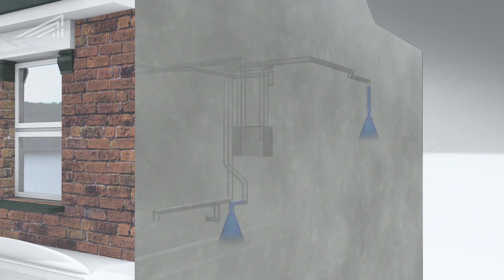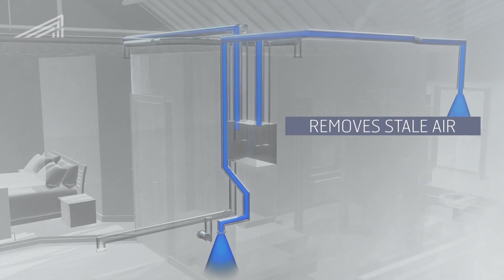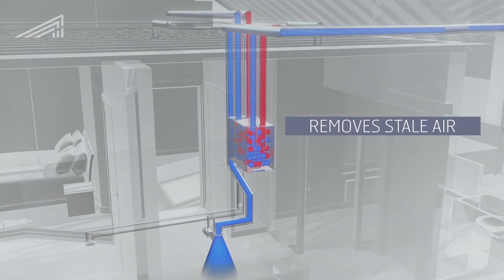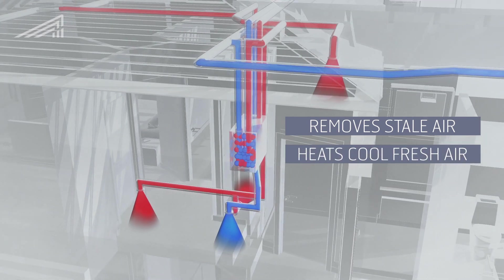We fitted a mechanical ventilation heat recovery unit. This takes stale air from wet rooms, such as bathrooms and kitchens, and uses this to heat cool, fresh air as it's fed into the property.